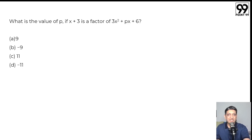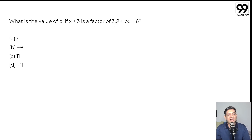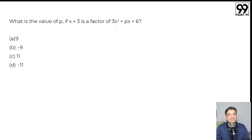Let's start with this question. This is a fairly straightforward question: what is the value of p if x plus 3 is a factor of 3x² plus px plus 6? Now if x plus 3 is a factor, it basically means that if I divide 3x² plus px plus 6 by x plus 3, I should get the remainder as 0.